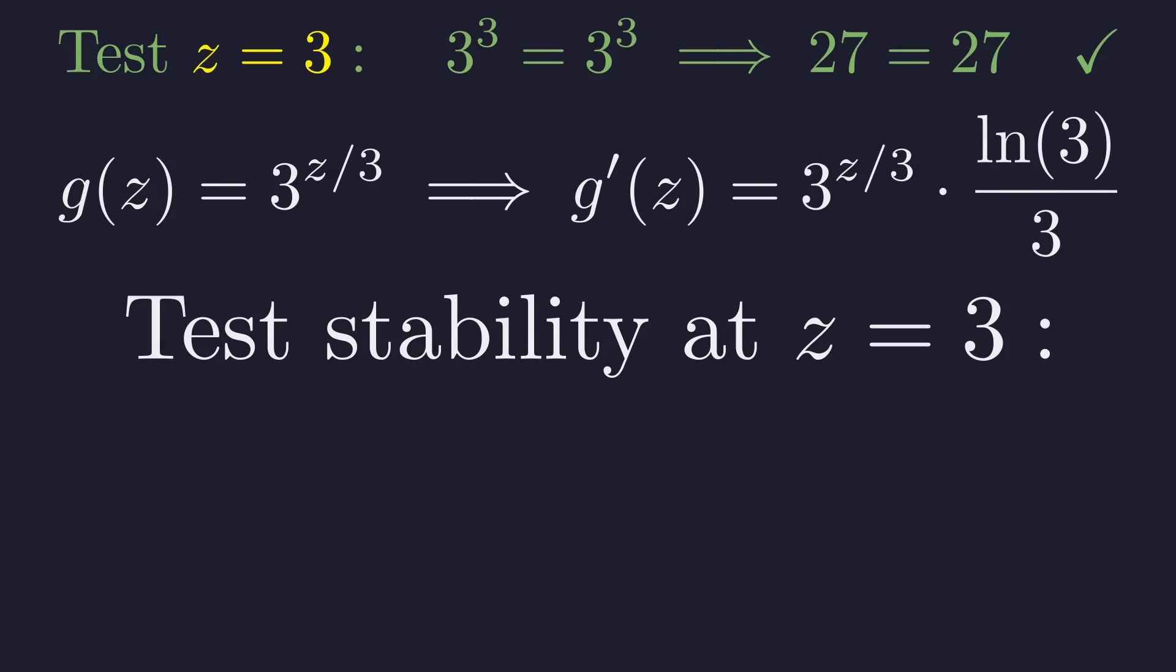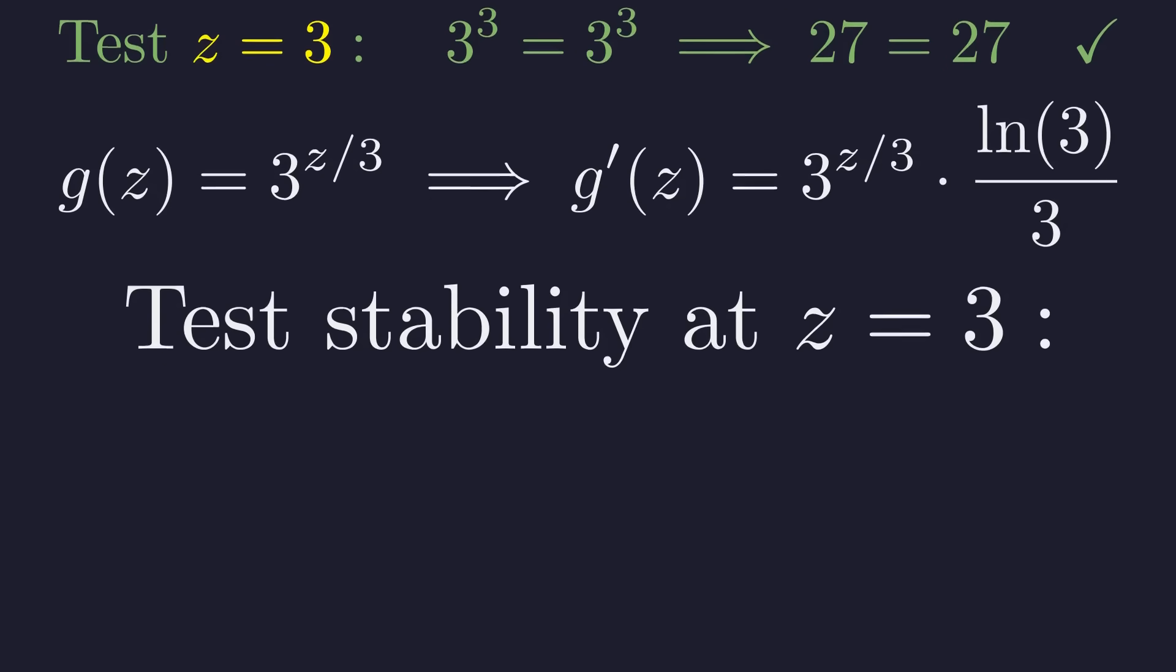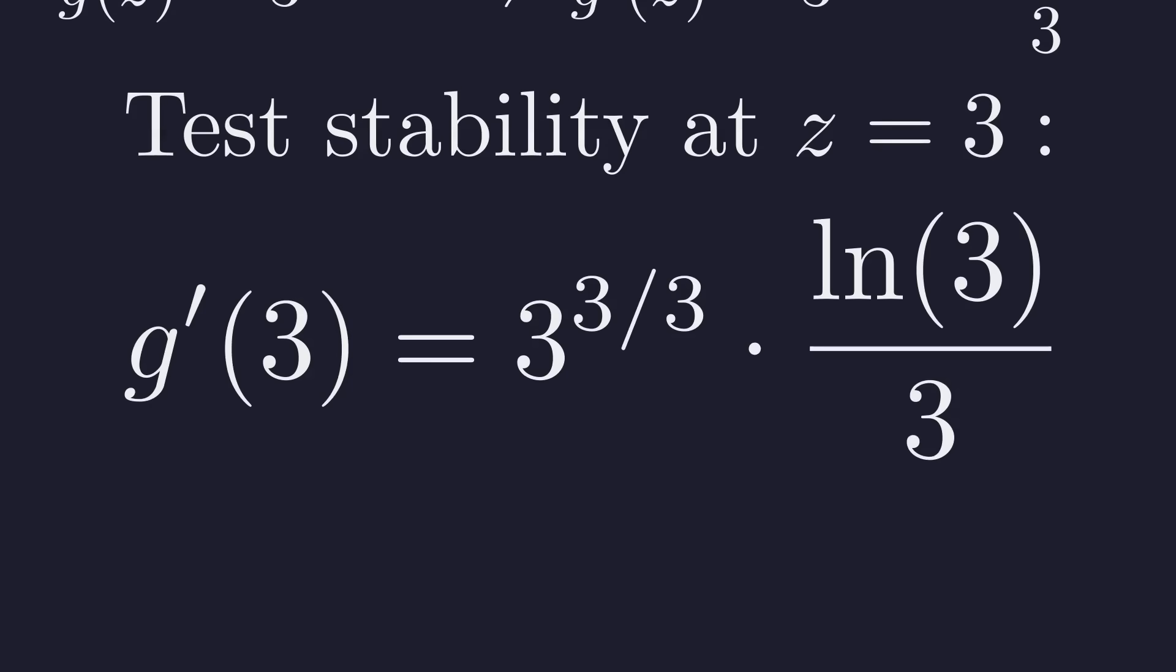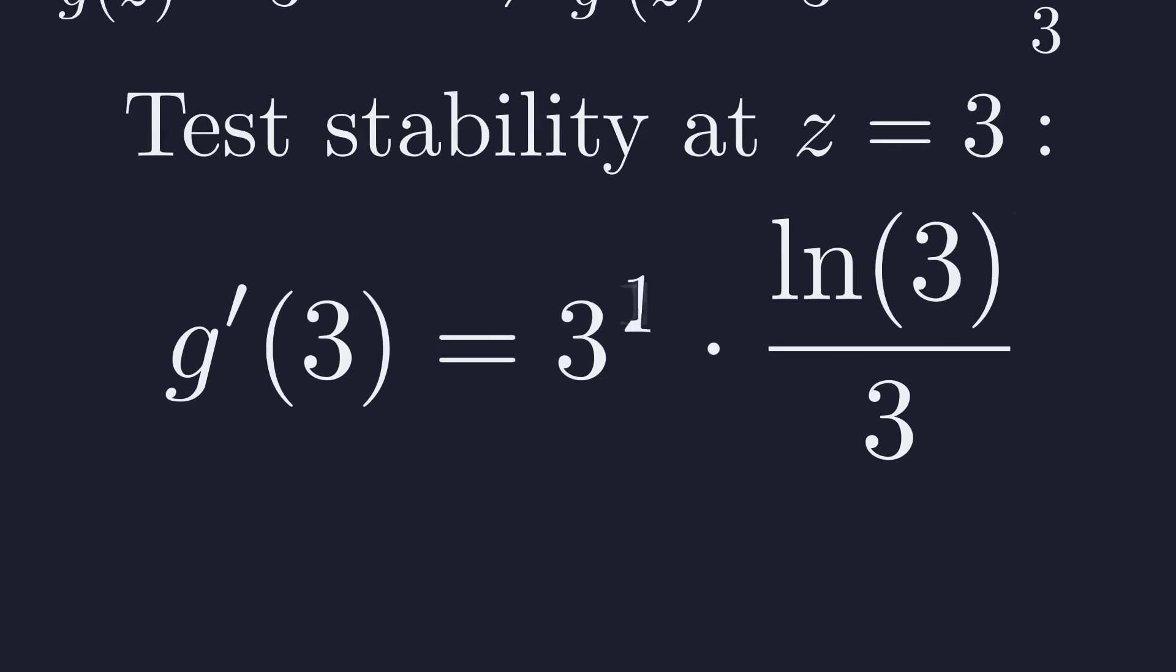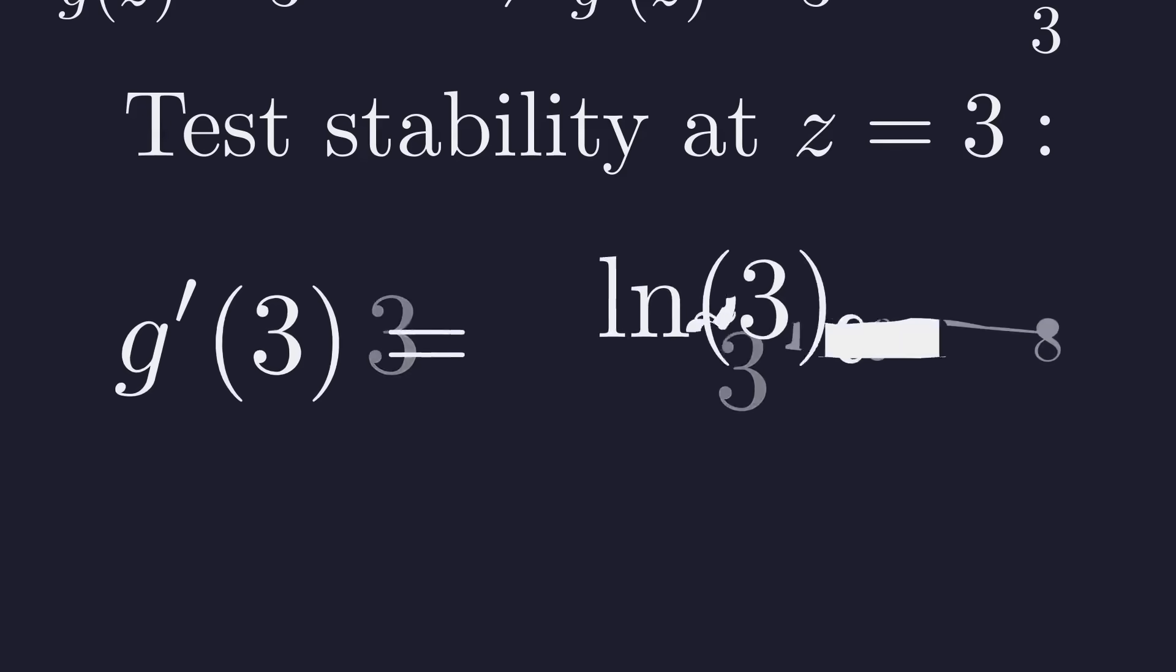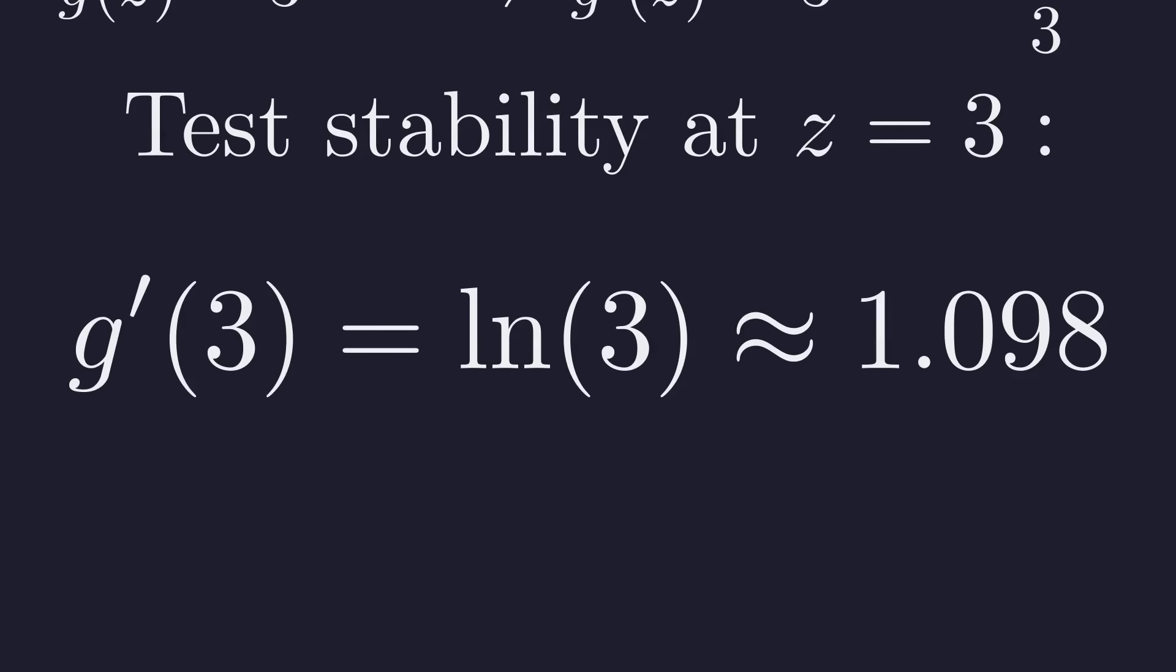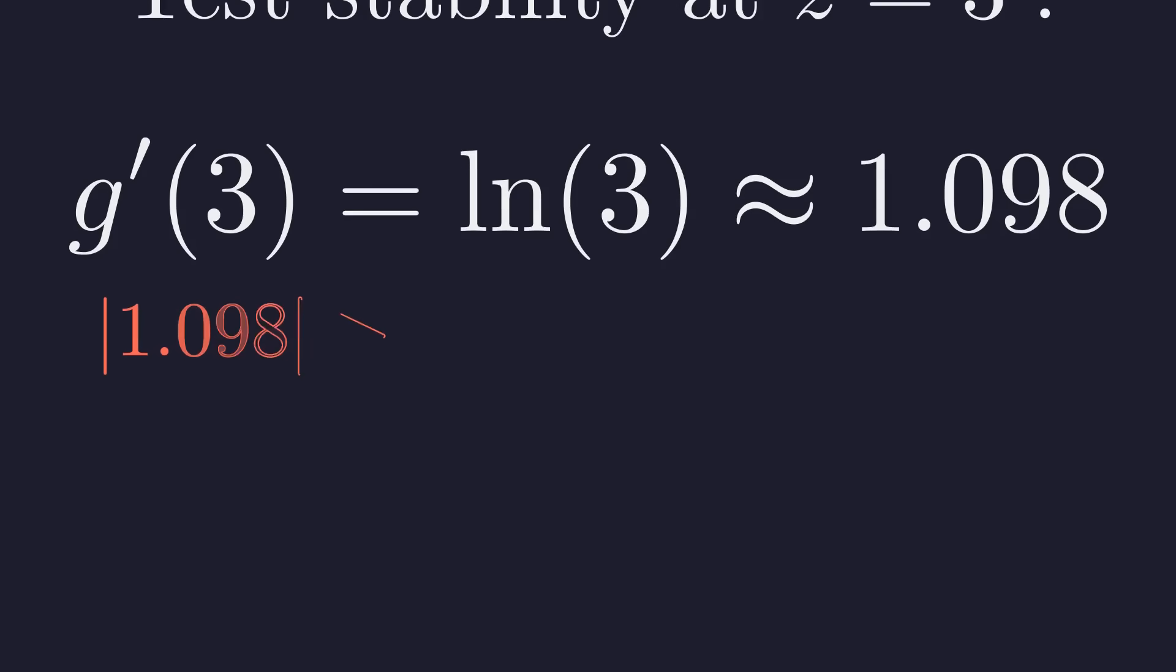Let's test the point z equals 3. Substituting 3 into the derivative, the exponent becomes 1, and the 3's cancel, leaving the natural log of 3, which is approximately 1.098. This value is greater than 1. The integer solution is unstable. The sequence does not converge to 3.